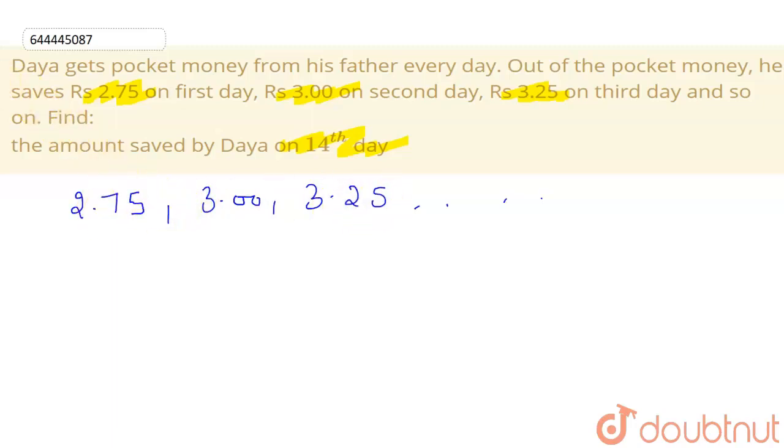So this is an AP with its first term to be 2.75 and its common difference equal to 3 minus 2.75, which will be equal to 0.25. And we want to see what amount he saved on 14th day.